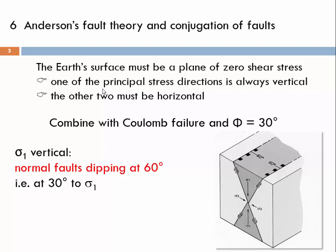Anderson's fault theory postulates that the Earth's surface must be a plane of zero shear stress, which is compatible with the observed fault orientations we just discussed. That means one of the principal stress directions must always be vertical and the other two must be horizontal.